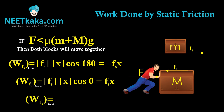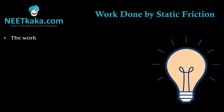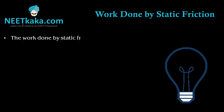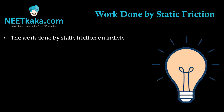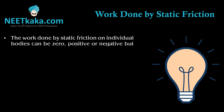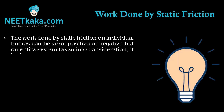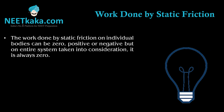The total work done is minus Fs times x plus Fs times x, so the total work done on the system of the two blocks is 0. From this, we can say that the work done by static friction on individual bodies can be 0 — like in the first case — or can be positive like on the upper block in this case, or can be negative like on the lower block in this case.